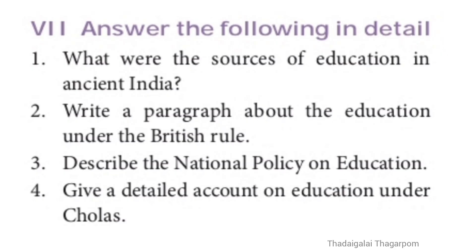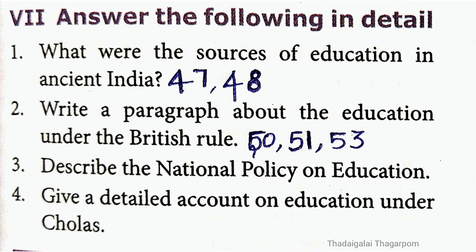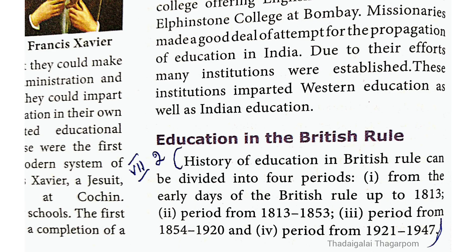Detailed answer, Question 2: Write a paragraph about education under British rule (pages 50-51). The history of education in British rule can be divided into 4 periods: up to 1813; 1813 to 1853; 1854 to 1920; and 1921 to 1947.